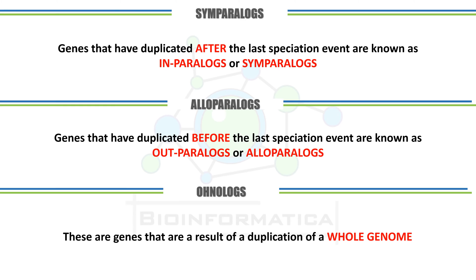We can also classify paralogues into three types. The first type is symparalogues, or in-paralogues — genes or sequences which have duplicated after the last speciation event. The second type is alloparalogues, or out-paralogues — genes or sequences which have duplicated before the last speciation event. The last type is known as onologues, which are genes that are the result of a whole genome duplication event.